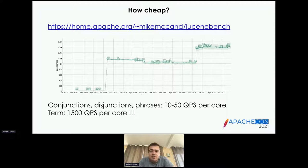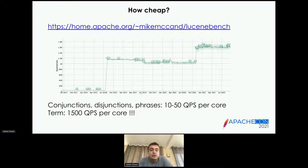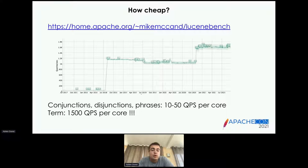I took a screenshot from Lucene's nightly benchmark that Mike McCandless has been maintaining in his spare time for more than 10 years — a wonderful resource, link at the top of the slide. If you look at queries per second on this Wikipedia dump dataset, common queries like conjunctions, disjunctions, or phrases reach tens to 50 queries per second per core, while term queries reach thousands. So whenever you can replace a conjunction, disjunction, or phrase with a term query, you'll get much faster search results.